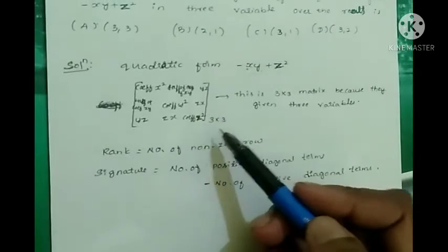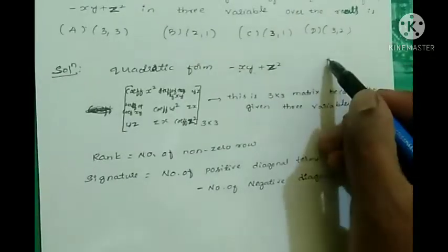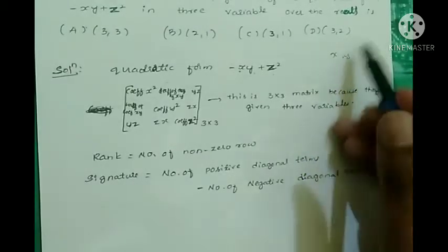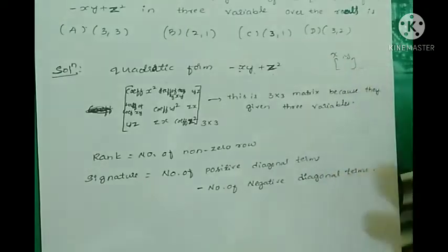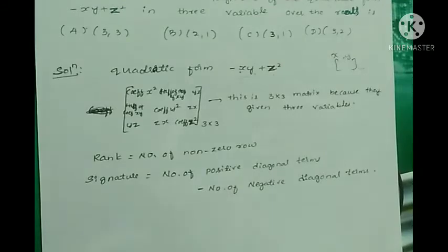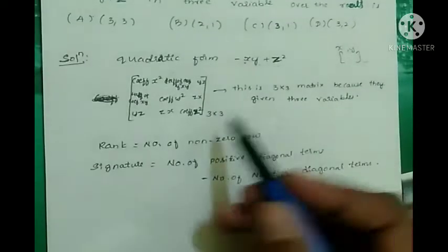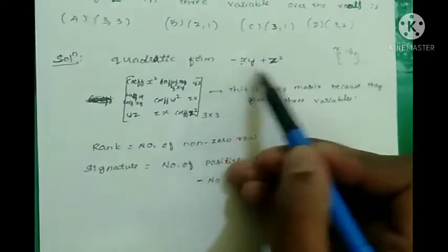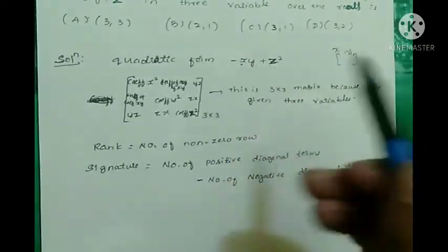If only two variables x and y are given, then we consider a two by two matrix. If more than three variables are given, we construct a matrix of that corresponding order. Here we consider a three by three matrix because three variables x, y, z are given.